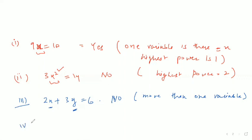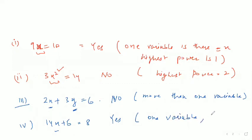Fourth part: 14x + 6 = 8. Is it a linear equation in one variable? Yes, because one variable is there, that is x, and the highest power is one.